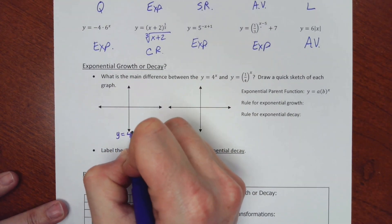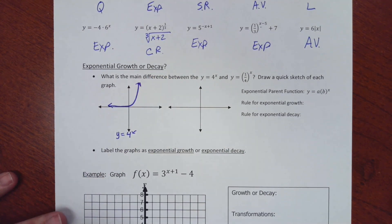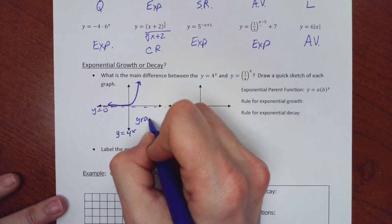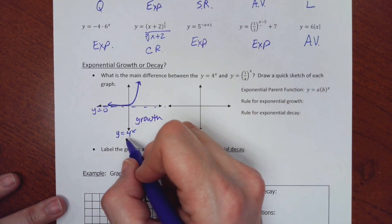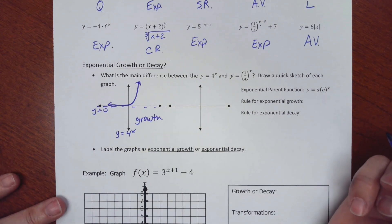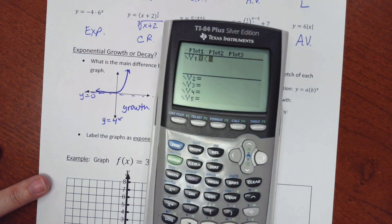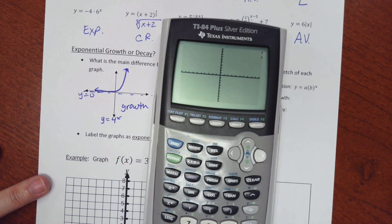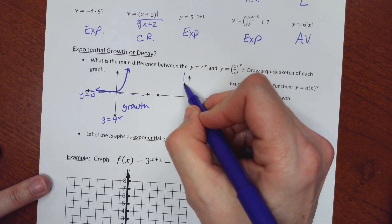y = 4^x still has an asymptote at y = 0 and is a growth because that base is bigger than 1. When that base is bigger than 1, it grows. Now if I use a base of one-fourth, you can see that it is a decay — it starts high and goes down.